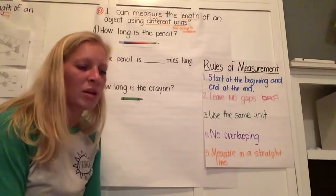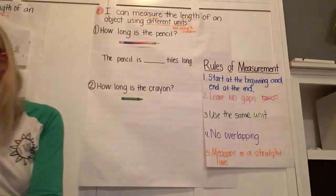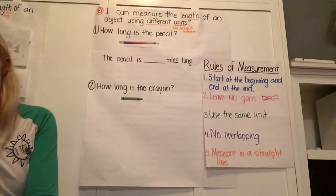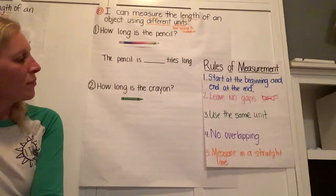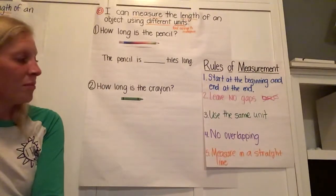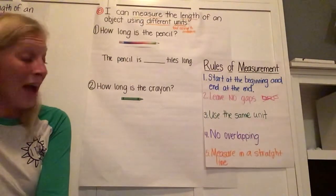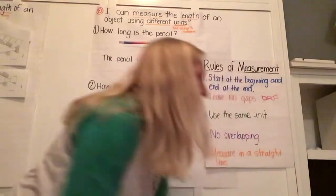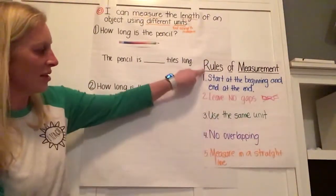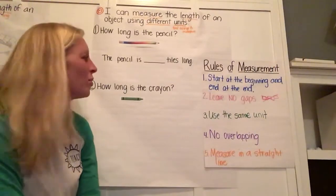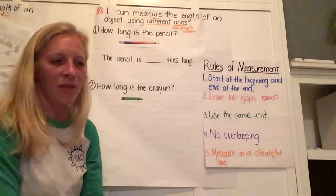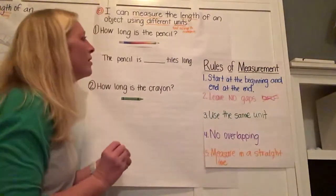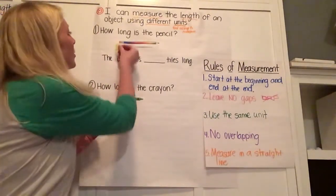When you know, I want you to put a thumb in front of your tummy. How are you using your unit rules of measurement to help you? Where are you starting? Are you using the same unit? Are you leaving any gaps? Are you overlapping? Are you going in a straight line? Remember to always look back at this and see, am I doing the right thing? Am I following those rules of measurement? Give me a thumbs up when you think you know how many tiles long that pencil is.